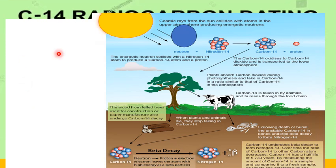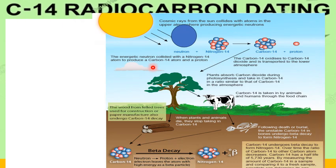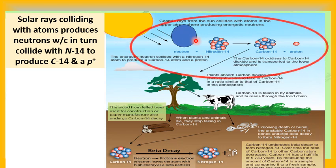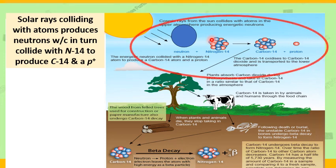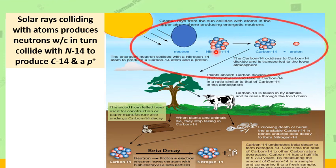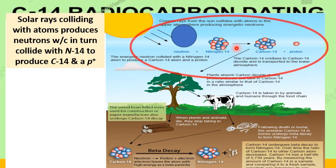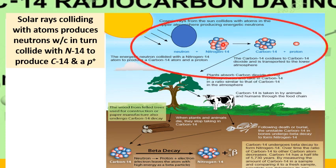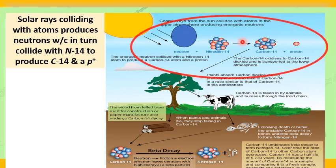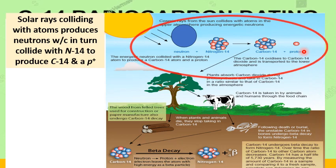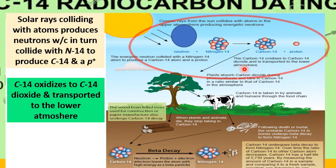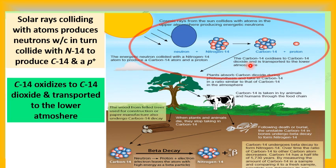As illustrated in this figure, energetic neutrons are produced when cosmic rays from the sun collide with atoms such as nitrogen-14 in the upper atmosphere of the earth. The collision of a neutron and nitrogen-14 nucleus enables nitrogen-14 to disintegrate into carbon-14 and a proton. Carbon-14 oxidizes to carbon dioxide and is transported to the lower atmosphere.